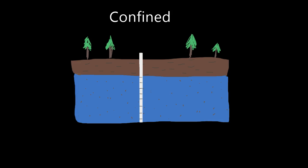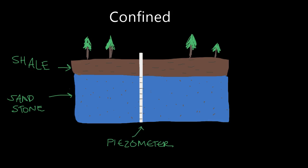Now let's look at the difference in a confined aquifer. Here we have the sandstone, and then on top of our sandstone we have — let's call it a shale — a confining unit, or confining bed. And here's our piezometer. This is different. What do we know about confined aquifers? We know that the water in this confined aquifer is under pressure. There's pressure built up because of this overlying confining bed overlying our aquifer.